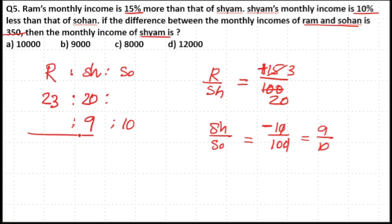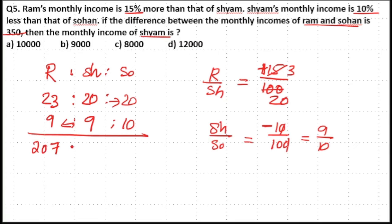Now filling in the combined ratios: Shyam is 20 and 9. So we calculate 23 into 9 is 207, and 20 into 10 is 200. This gives us Ram as 207 units, Shyam as 190 units, and Sohan as 200 units.